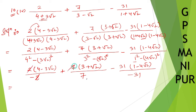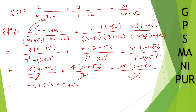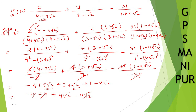Now, 2 cancels, 7 cancels, and 31 cancels. The minus goes up, giving minus (4 minus 3 root 2), plus (3 plus root 2), and the minus makes it plus (1 minus 4 root 2). Combining: minus 4 plus 4 equals 0. Then 3 root 2 plus root 2 gives 4 root 2, minus 4 root 2 gives 0. So the final answer is 0.